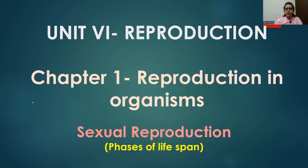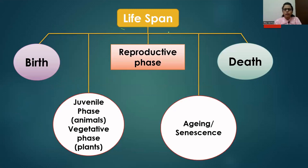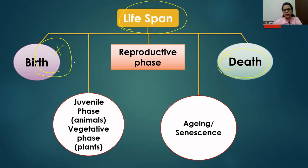Hi everyone. In this video we are going to discuss in brief about sexual reproduction in organisms. Let's begin with phases of life span. We know that the time period between birth and natural death of the organism is called life span. During its entire life span, every individual has to go through three very important phases.